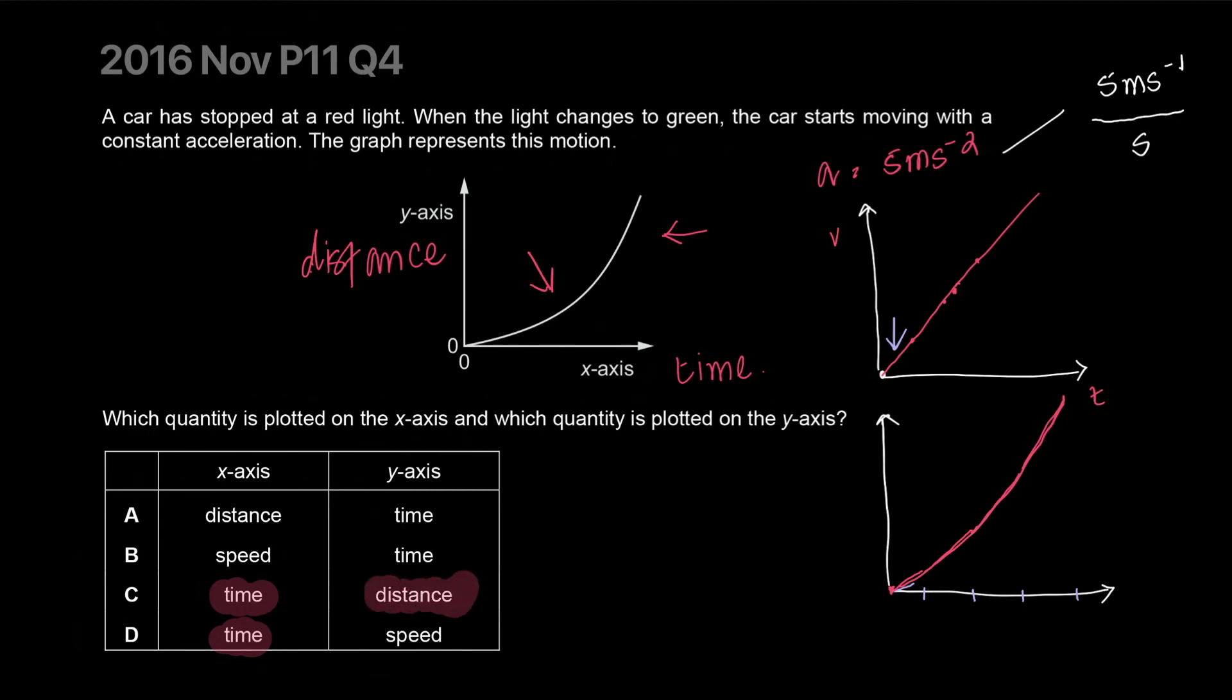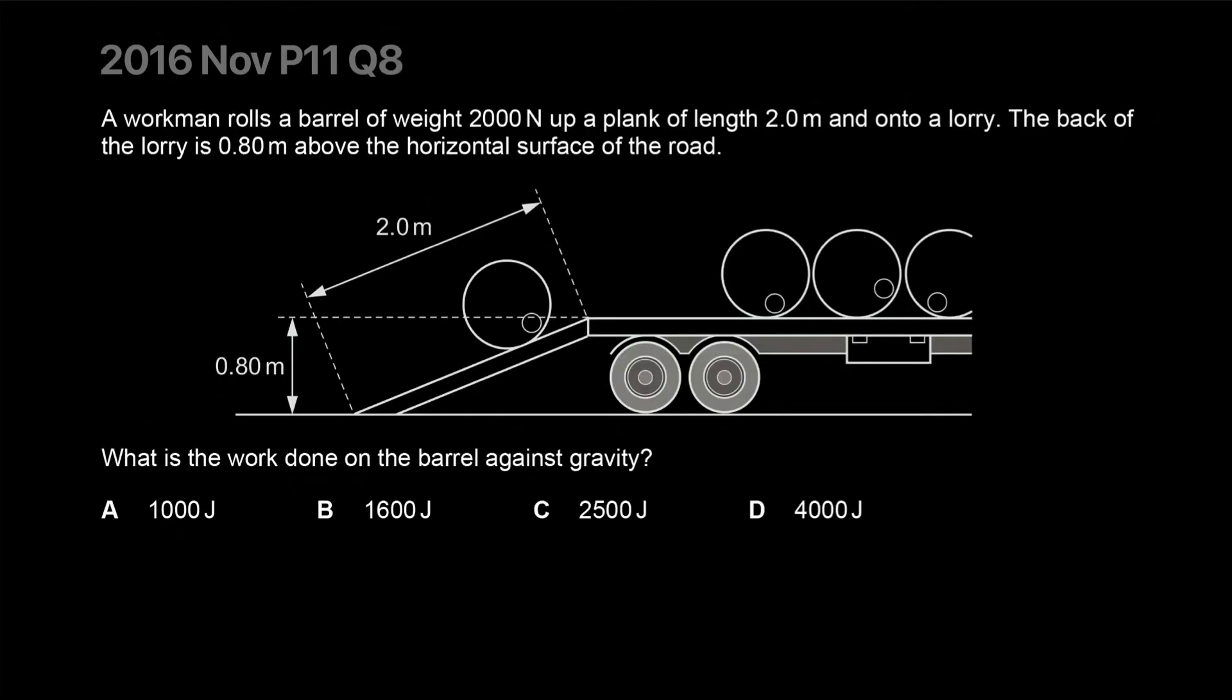A workman rolls a barrel of weight 2000 newtons up a plank of length two meters and onto a lorry. The back of the lorry is 0.8 meters above the horizontal surface. The diagram is better than the words. What is the work done on the barrel against gravity?